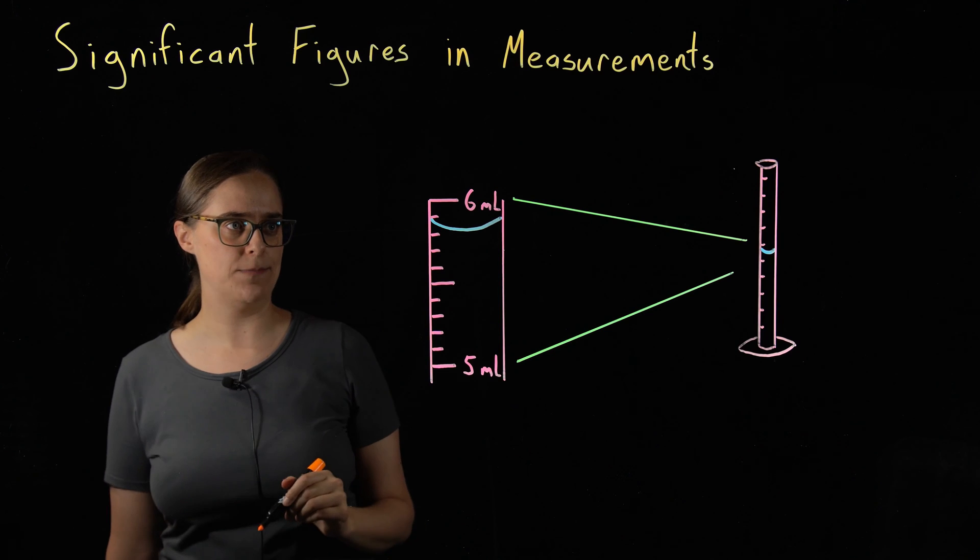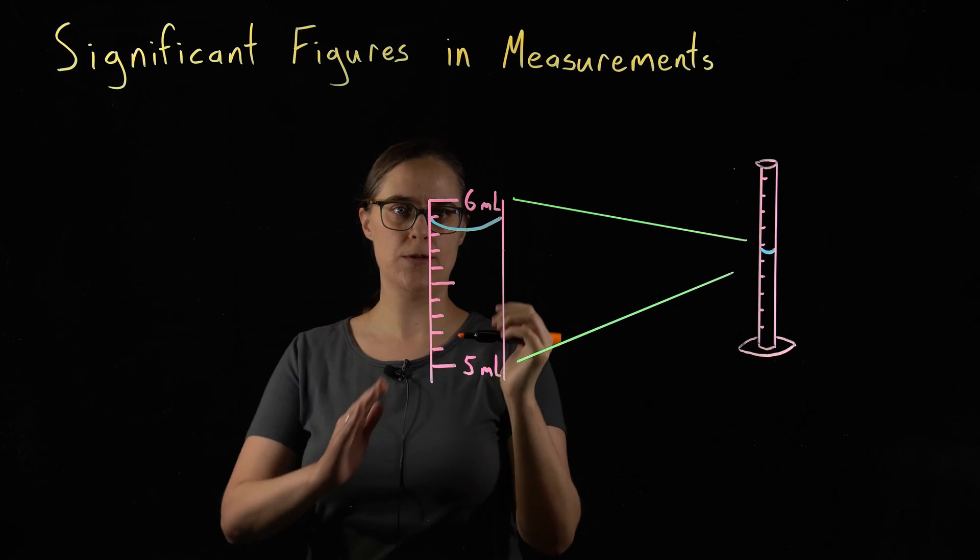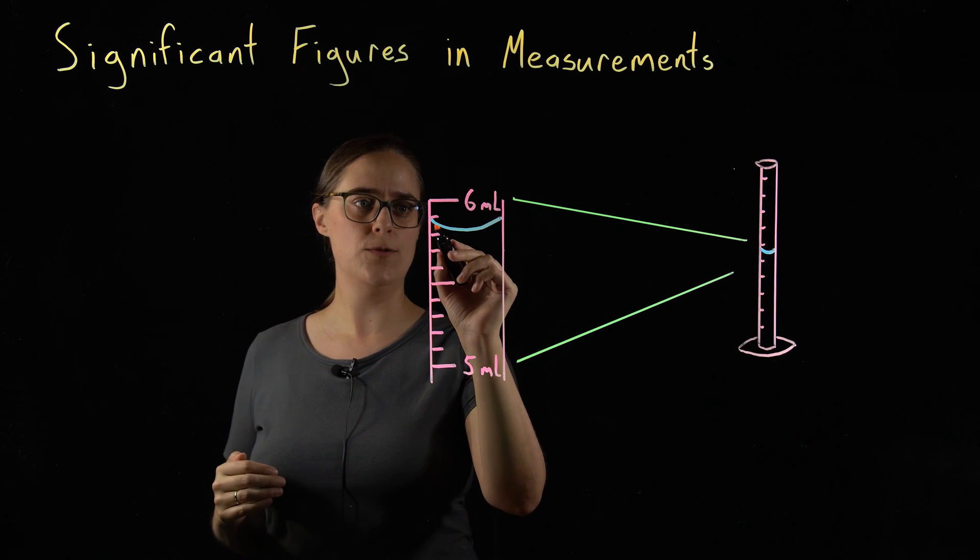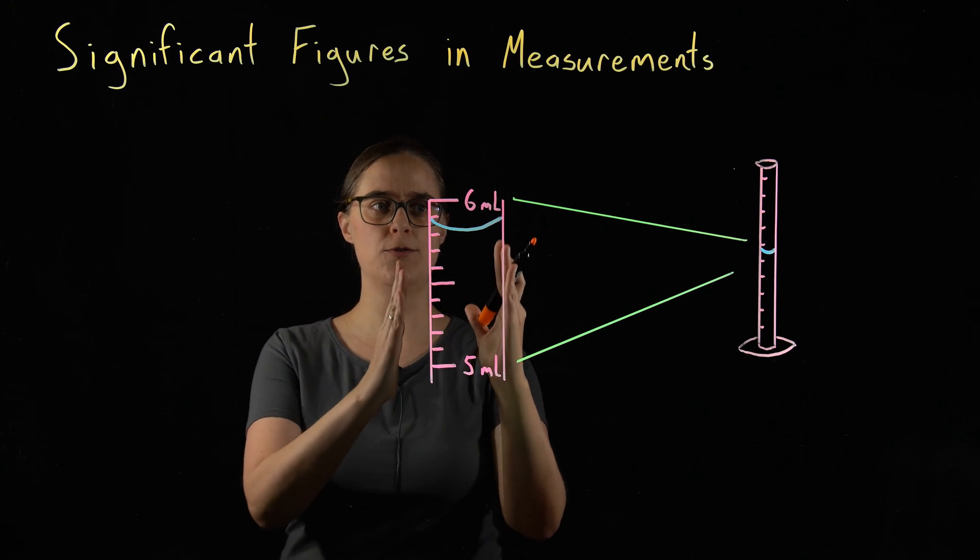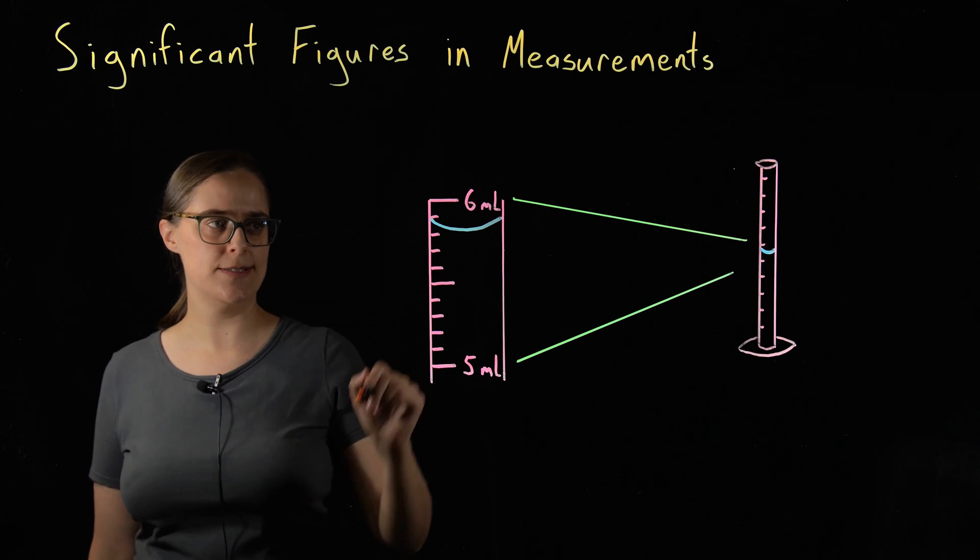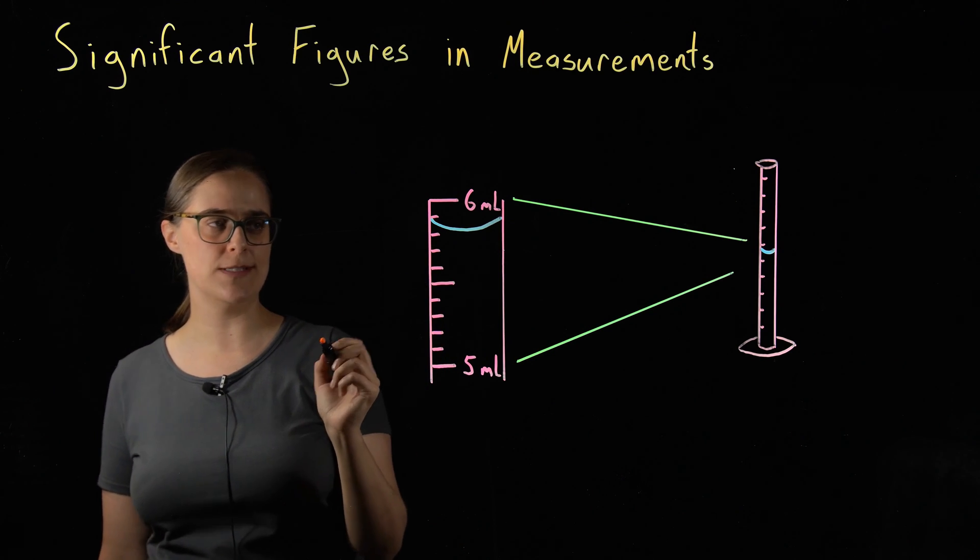The reason that this happens is that this particular liquid is more attracted to the glass than it is to itself, so you see the edges of it start to creep up the glass. This adds a layer of complexity when you are trying to measure the volume of this liquid.